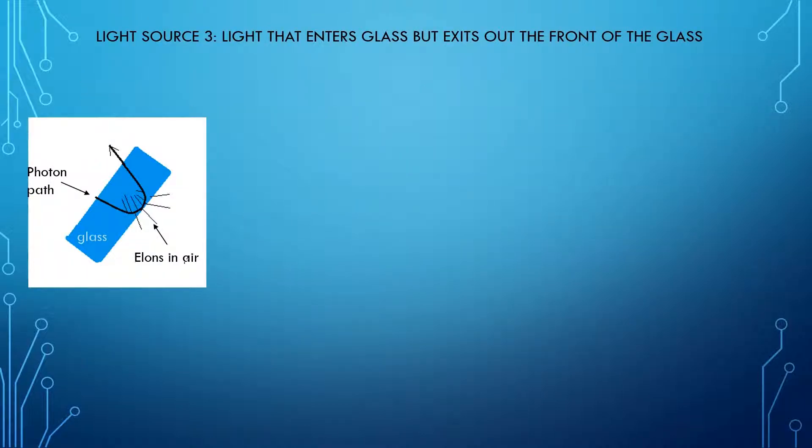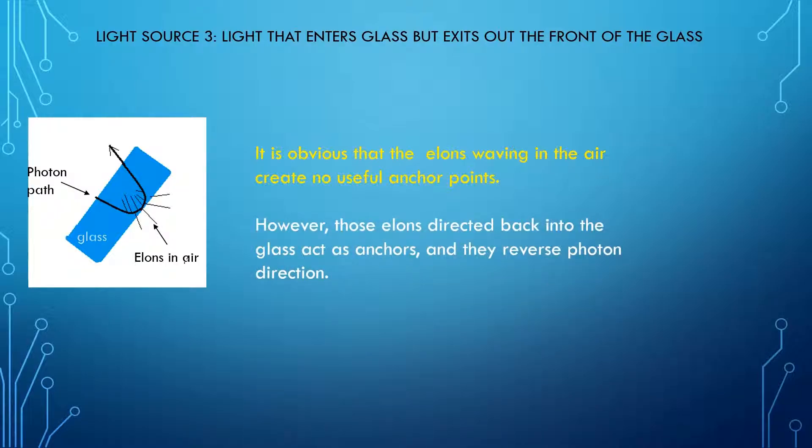In this illustration, I have shown what the flight path of a photon might be when it nears the backside of the glass pane in the experiment. It is obvious that the elons waving in the air create no useful anchor points. However, those elons directed back into the glass act as anchors and they reverse photon direction. This caused the number three light shown as pink in the experiment.